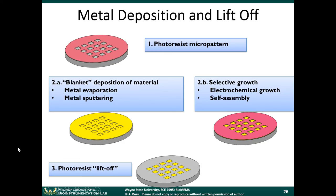This process can also be used for electrochemical growth or self-assembly. The patterned photoresist layer exposes some of the substrate and protects some of it — you can do processes other than metal lift-off. You can use electrochemistry if you want to grow materials, or do electrochemical deposition to grow different metals. You can use self-assembly processes, or even attach certain types of chemical molecules if they can withstand the photoresist stripper used in the lift-off process.